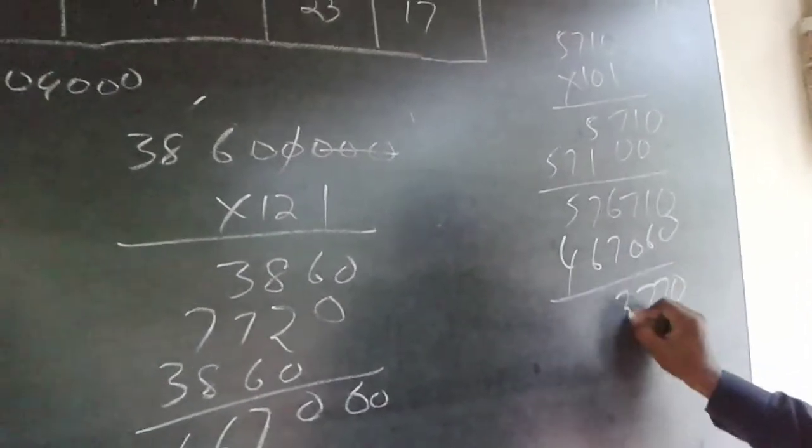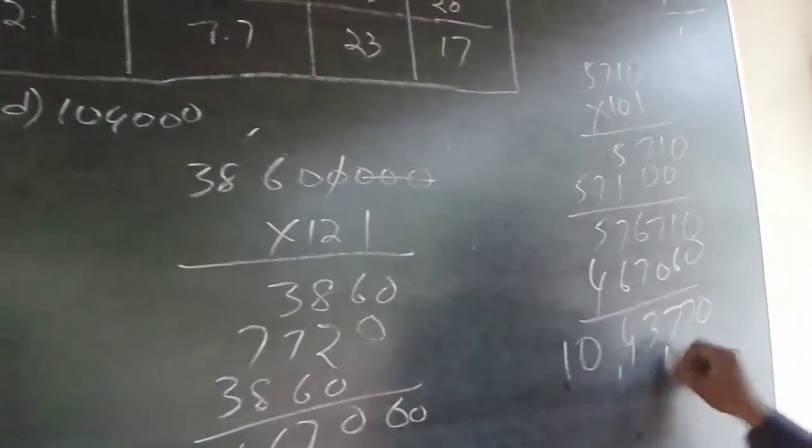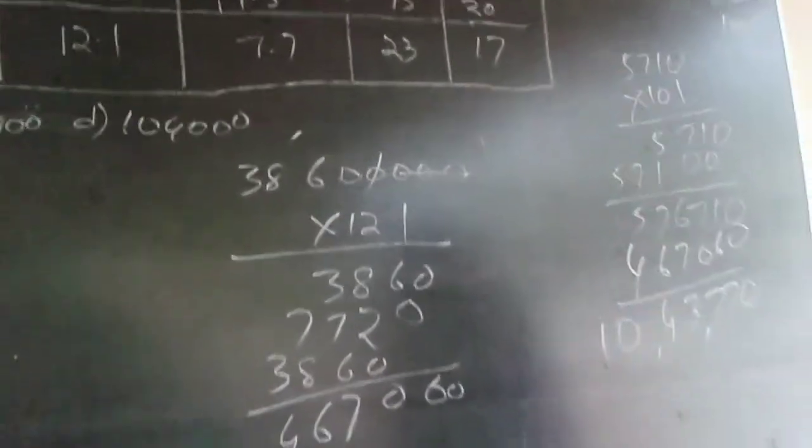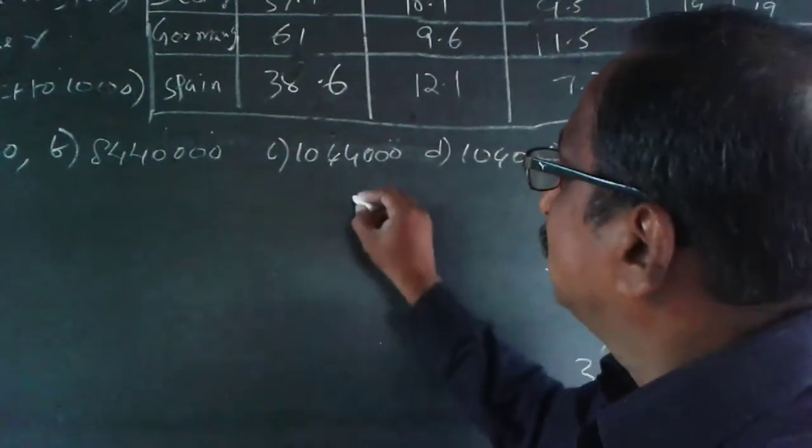So it will be 10 lakhs 43,770. They asked rounded off to thousands, so the answer is 10 lakhs 44,000.